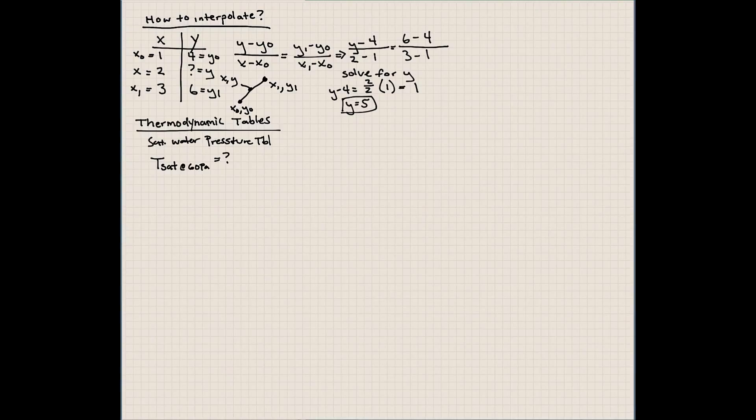What's the saturation temperature of water at 60 kilopascals pressure? Well, if you guys look in your table, you're not going to find that value, so what we have to do is interpolate. In the table we have the pressure above that at 50 kilopascals, so at 50 kilopascals we know that the saturation temperature is 81.32 degrees Celsius.